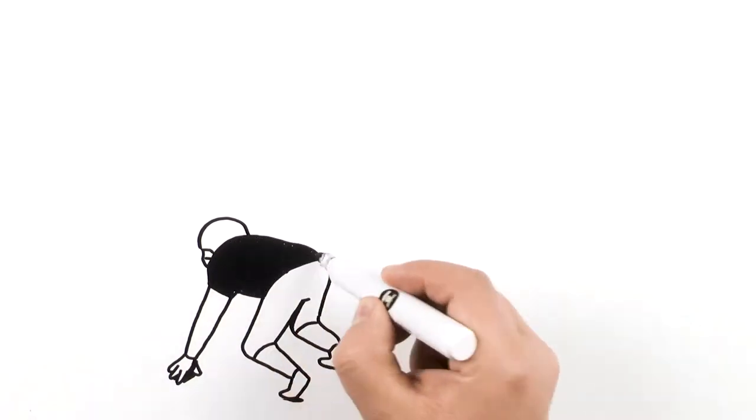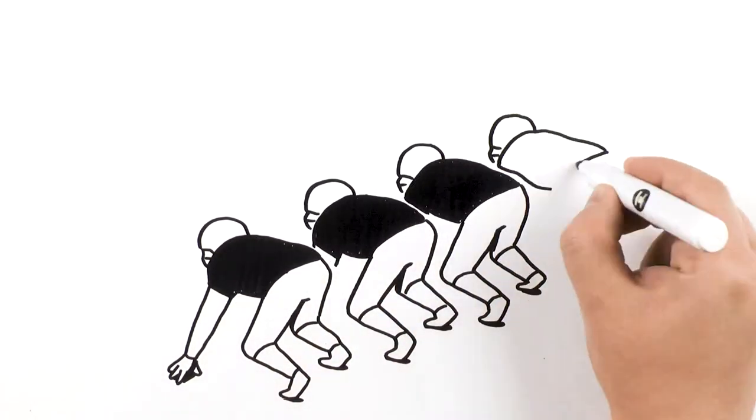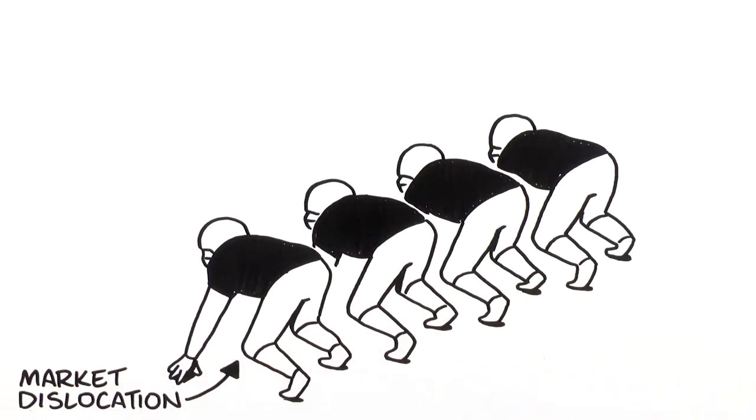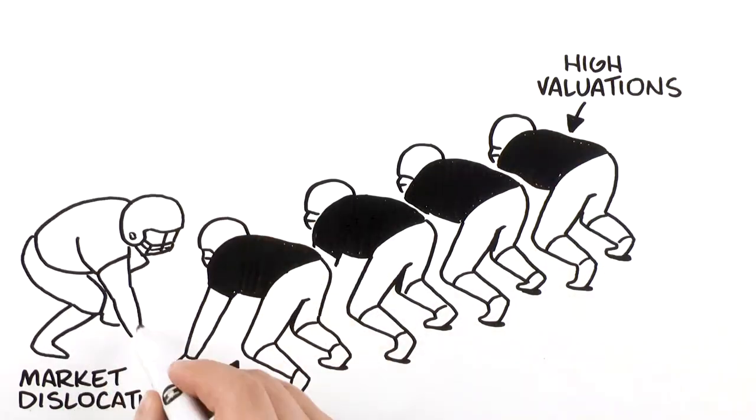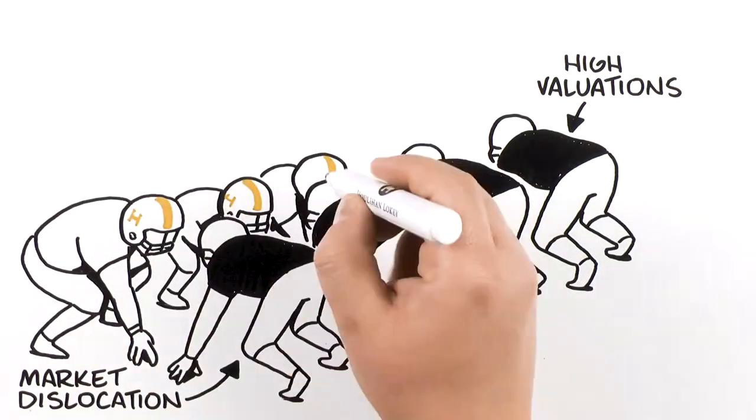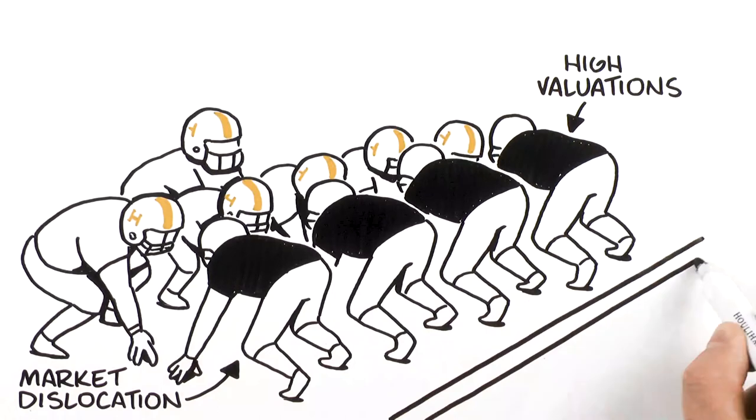The best teams can score where it's the toughest, the red zone. When market dislocation and high valuations lead to a goal-line stand, these dynamics also create unique investment opportunities such as adding leverage or preferred equity at the fund level, purchasing or selling stakes in other fund managers, and selling non-core or orphaned portfolios.